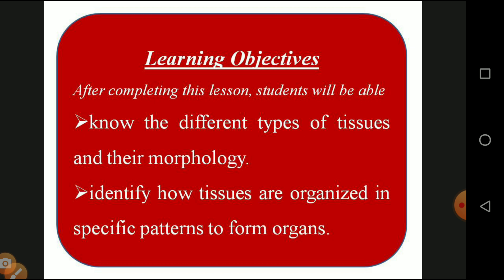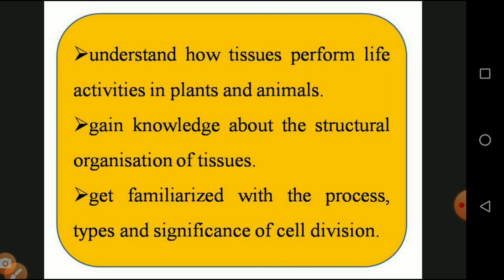Next, identify how tissues are organized in specific parts and organs - not all tissues are present in all parts of the body. Each type of tissue performs a special function. Also, understand how tissues perform the life activities of plants and animals, and gain knowledge about cell division - amitosis, mitosis, and meiosis - and how cell division performs specific functions in the body.